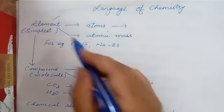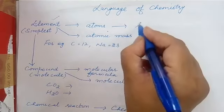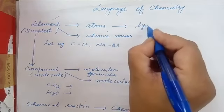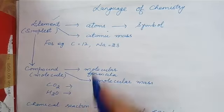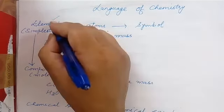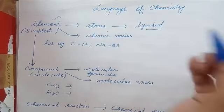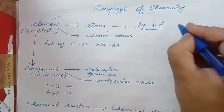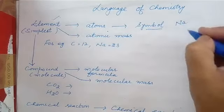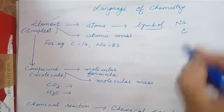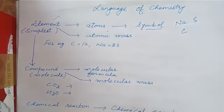This element is made up of atoms, and atoms are represented by a symbol. So the symbolic representation of an element is its symbol. For example, sodium has the symbol Na, carbon has the symbol C, and sulphur has the symbol S.